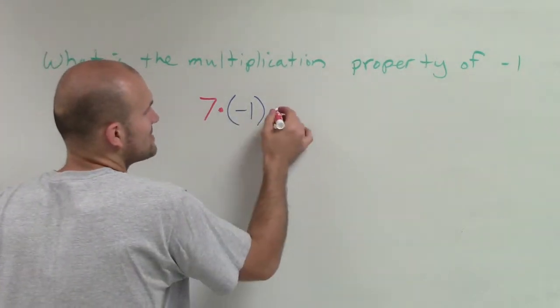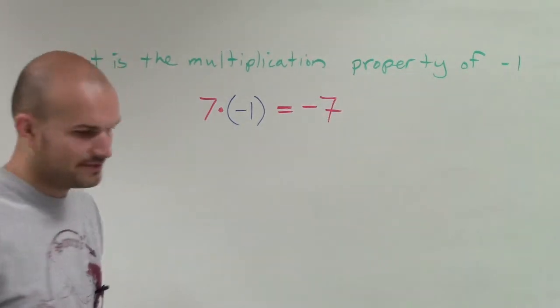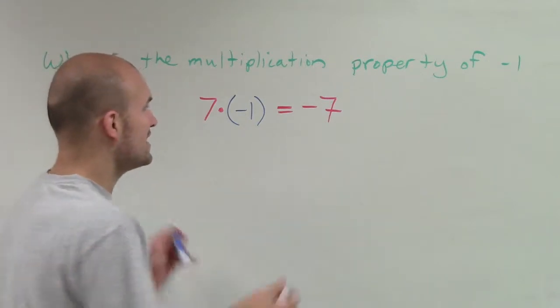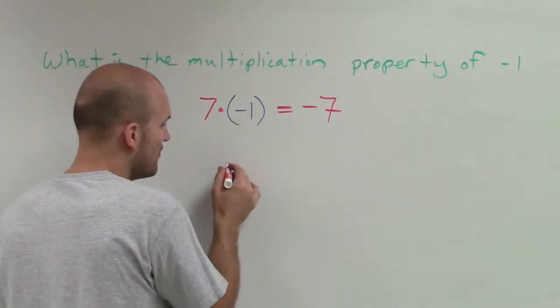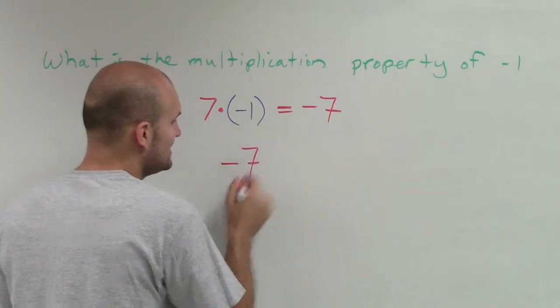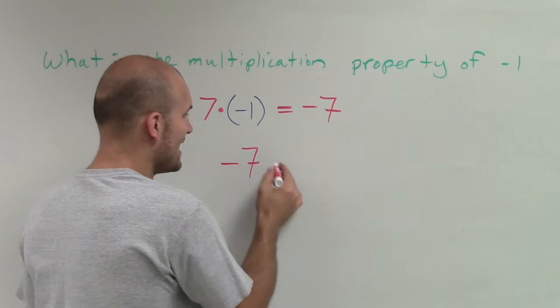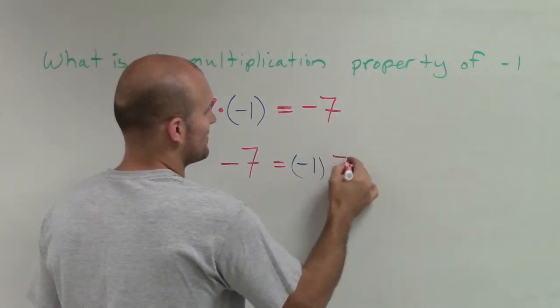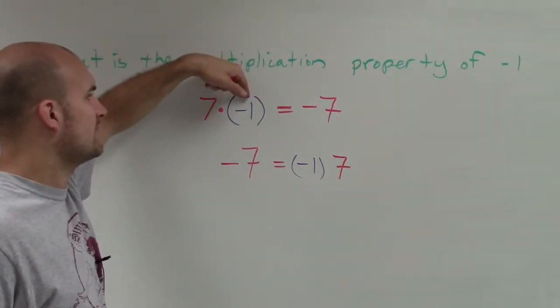What we figured out is 7 times negative 1 equals negative 7. Now, it's very important if you understand that if 7 times negative 1 equals negative 7, then that means I can rewrite negative 7 as negative 1 times 7. Now, how did you write 7 times negative 1 here and then write negative 1 times 7 here?